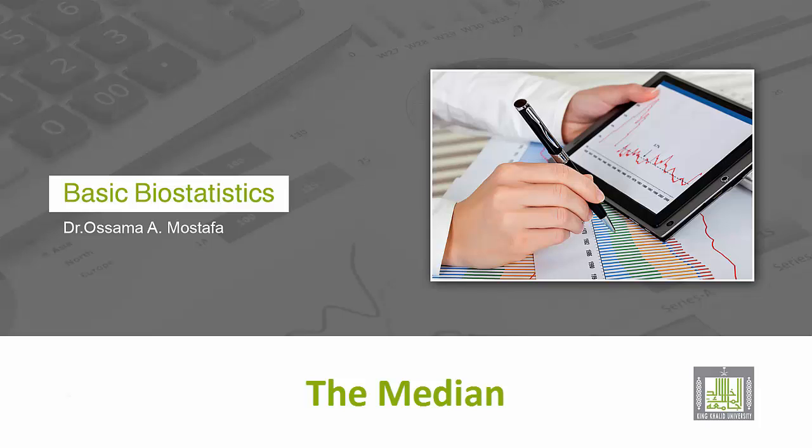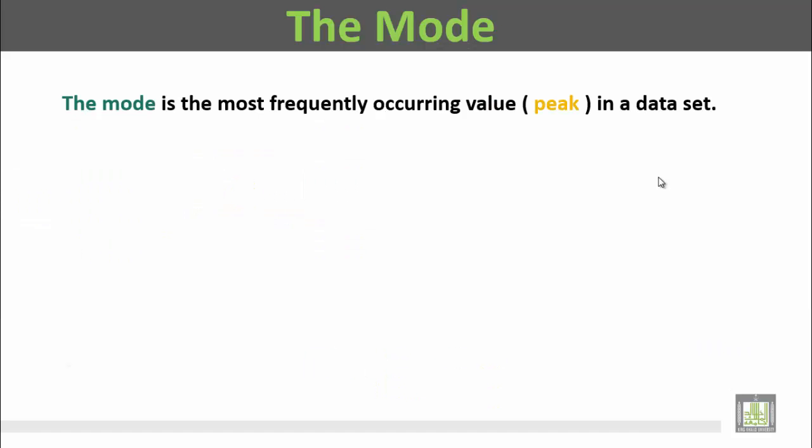The mode, المنوال. This is the first measure for central tendency. The mode is the most frequently occurring value, the peak, in a data set.